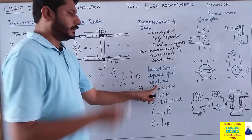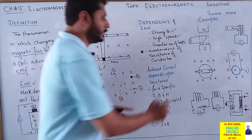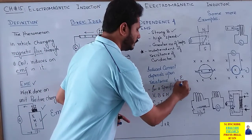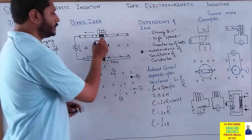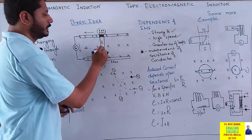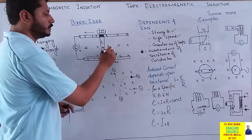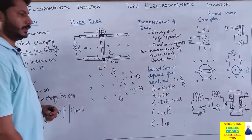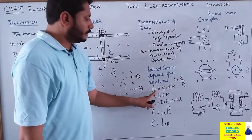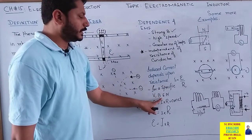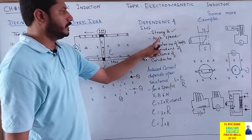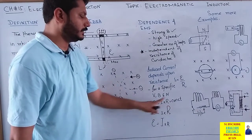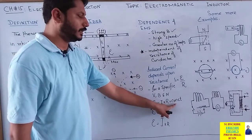یہ induced current depend کرتا ہے resistance پر: I = E/R۔ یہاں پر جو EMF اس conductor میں induce ہوگی اسے epsilon sign سے denote کریں گے۔ For a specific velocity, magnetic field, and number of turns، the product of I and R یعنی EMF should remain constant۔ اگر یہ factors constant ہیں اور conductor کی resistance بڑھ جائے تو current کم ہو جائے گا but the product of I and R will remain same۔ اگر resistance کم ہو تو current increase کرے گا but for these specific V, B, and N, the EMF still remains constant۔